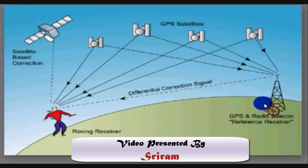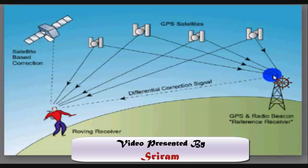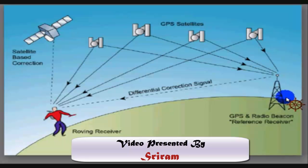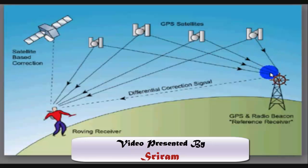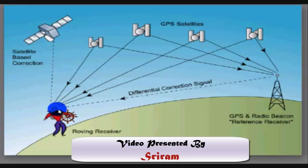We have a ground station, also called a GPS and radio beacon reference receiver. It is called a reference receiver because its position on the Earth is fixed. This fixed position is computed as electronic data on each and every satellite. Say I am carrying the GPS receiver in my hand, roving all over the globe, and my location is being computed as I will now explain.